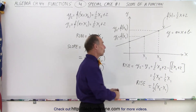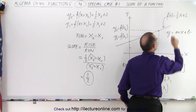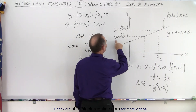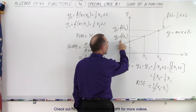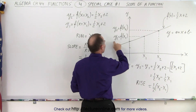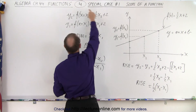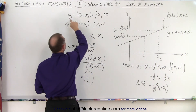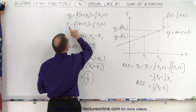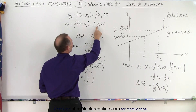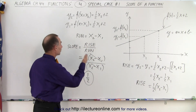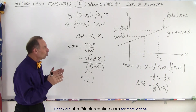You might ask why we did all that — couldn't we just look at the equation and see that m equals one half? Yes, but it's important to learn how to write this notation and to see that the y-value is simply obtained by evaluating the function for a particular x-value. Remember: plug in an x and you pull out a y. Plug in x₁, get y₁; plug in x₂, get y₂. The difference between the two y-values is the rise, and rise divided by run gives one half.